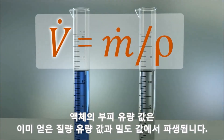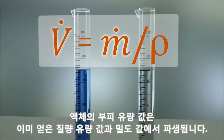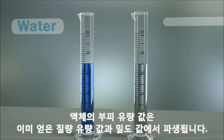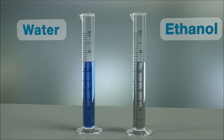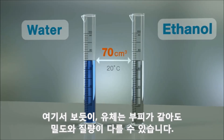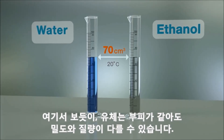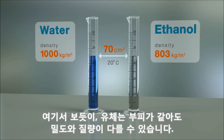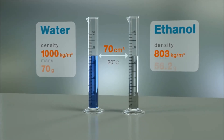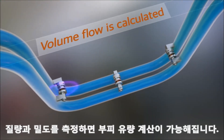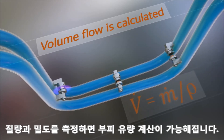Liquid volume flow is derived from the mass flow and density measurements already acquired. As in this example, fluids can have the same volume but different densities and masses. The mass and density measurements allow the calculation of the volume flow.